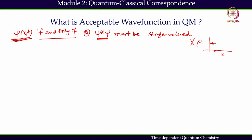For a particular position I have only one probability; I cannot have two different probabilities for a particular position. If I try to find out the probability of finding the particle at this position, I have only a single answer to this question.